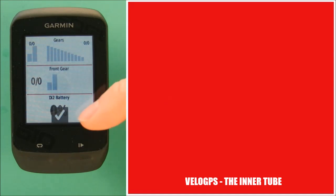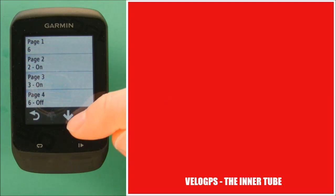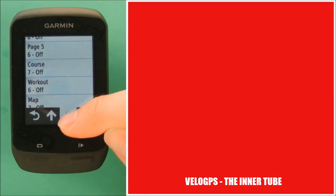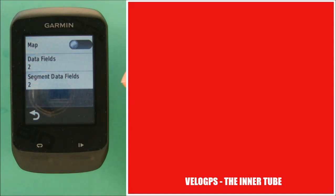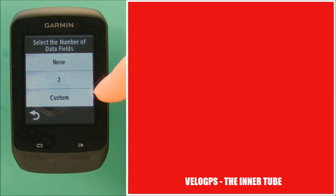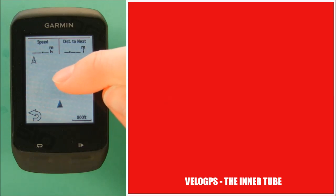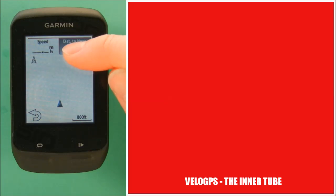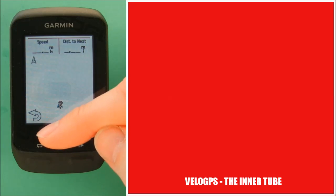Pages 4 and 5 are turned off at the moment, but if you're a real data junkie you can activate them. You have the option for a course page, a workout page, and a map page — which is for if you've uploaded a course pre-programmed on a mapping tool. Whilst the 510 doesn't have maps installed, you can do very basic navigation using the courses function, which gives you a breadcrumb trail — effectively a line on the screen. The data fields here can have up to two displays, such as speed and distance to next, and you can change those using any of the available categories.